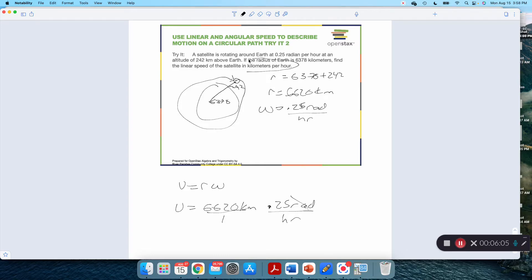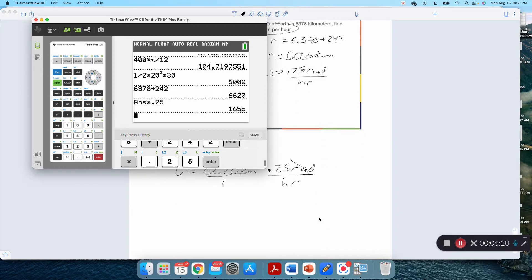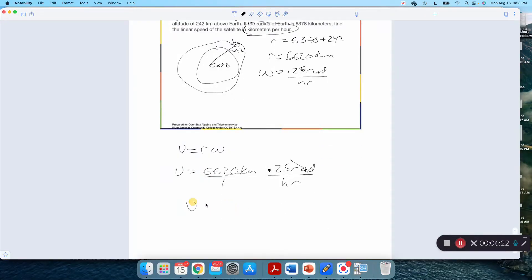Hey, that's what they asked for, kilometers per hour. I don't have to do any fancy converting here. So this is just 6620 times 0.25, and I can just hit here times 0.25, 1655 kilometers per hour. That satellite is moving over 1600 kilometers per hour.